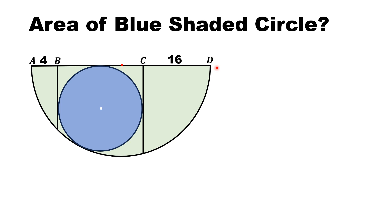First, we label the node points of the diameter of the semicircle as A, B, C, and D. We call the radius of the semicircle — this line segment — capital R. The radius of this blue shaded circle is this line segment, and we name it lowercase r.